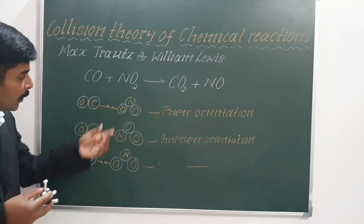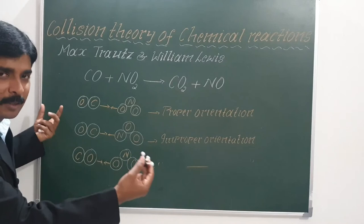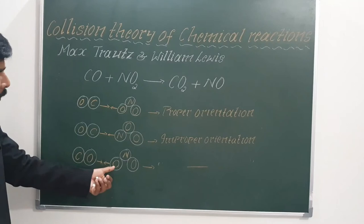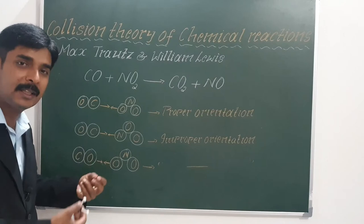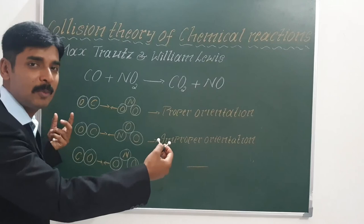But if the molecules collide in a different manner — for example, if nitrogen collides with carbon, it may just bounce back and not lead to product formation. Or if the oxygen atom of carbon monoxide collides with the oxygen atom of NO2, they may not lead to product formation. Only when they collide with proper orientation will they lead to product formation. In the case of improper orientation, the reactant molecules will just bounce back.